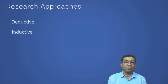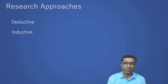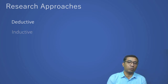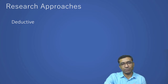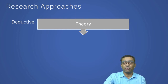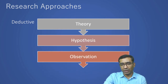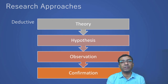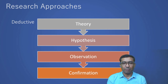Now let's move to the next point — research approaches. When we use scientific or philosophical reasoning, there are two major approaches we can use during our research process: deductive or inductive reasoning. Deductive reasoning is more towards quantitative analysis, where we have an established theory from which we decide our hypothesis, then collect data or do observation, and confirm our hypothesis based on the data.